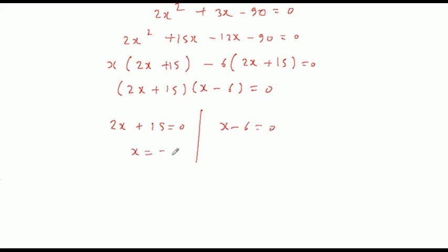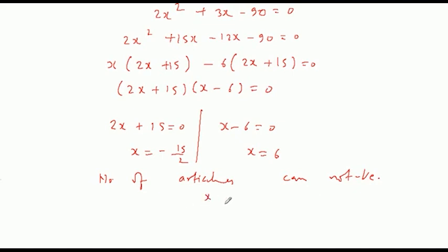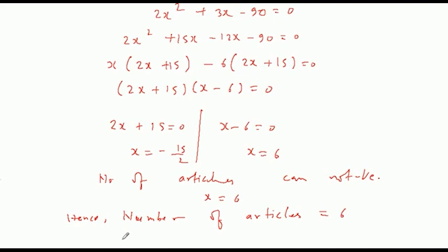तो यहां से x की value — यहां लिखेंगे: Hence, number of articles = 6। और यहां पर cost of each article = 2 × x + 3 = 2 × 6 + 3 = 15 rupees।